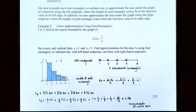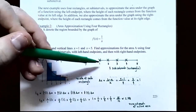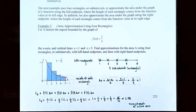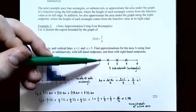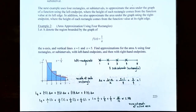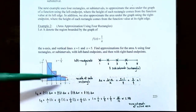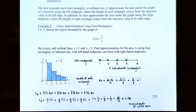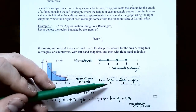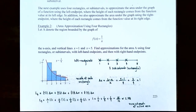Using left-hand endpoints: imagine the interval from x equals 1 to x equals 5 divided into four rectangles of equal width. The first rectangle goes between 1 and 2, the second between 2 and 3, third between 3 and 4, and the last between 4 and 5. Using the left endpoint, x equals 1 determines the height of the first rectangle, x equals 2 the second, x equals 3 the third, and x equals 4 the fourth. The width of each rectangle is delta x equals (b minus a) divided by n, which is (5 minus 1) divided by 4 equals 1.